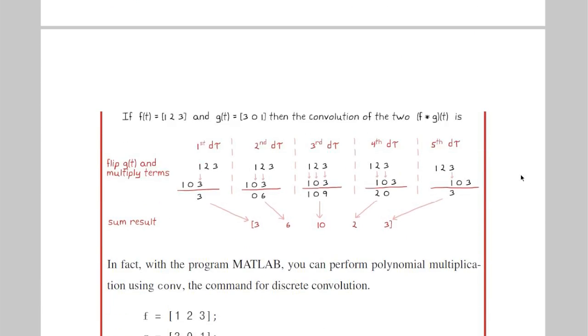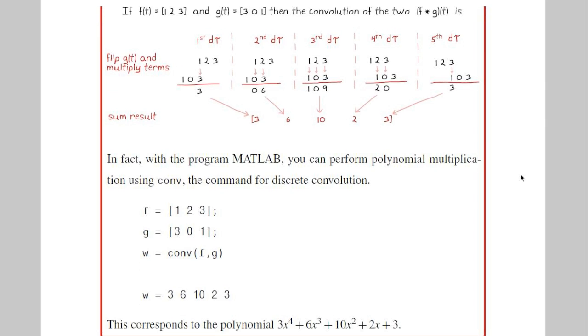Let's set f of t equal to the coefficients of the first polynomial. Here it's 1, 2, and 3. And g of t equal to the coefficients in the second, 3, 0, and 1. Then you can get the product of the two polynomials by convolving f and g. In fact, using the convolution function is the easiest way to multiply polynomials in MATLAB. You should try it out yourself, because if you're anything like me, you'll find it kind of interesting.